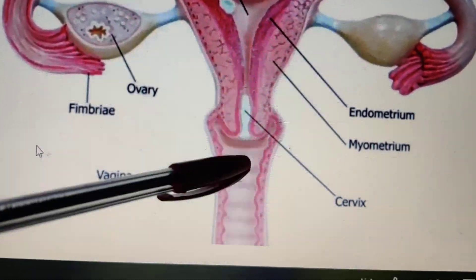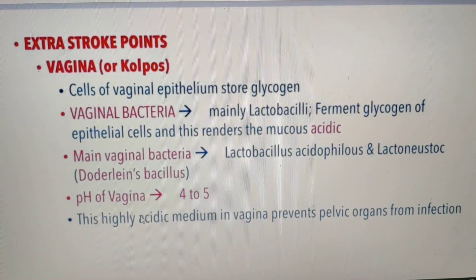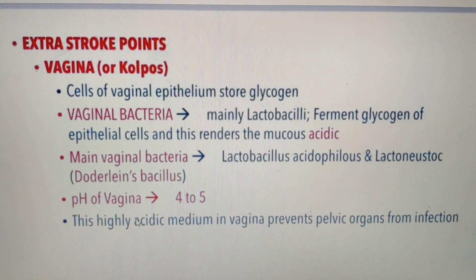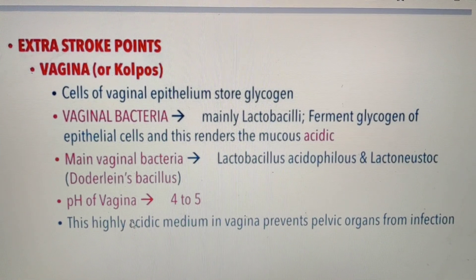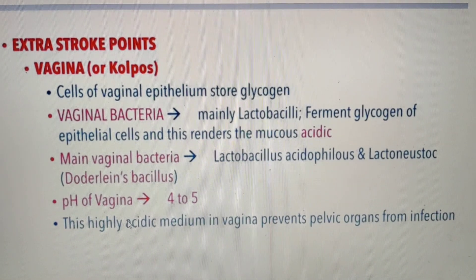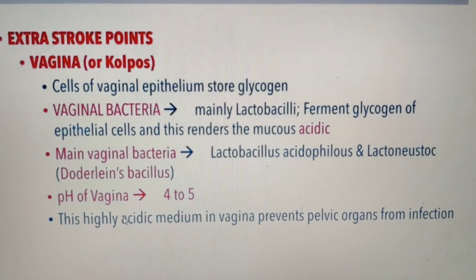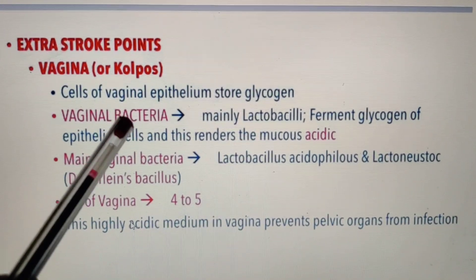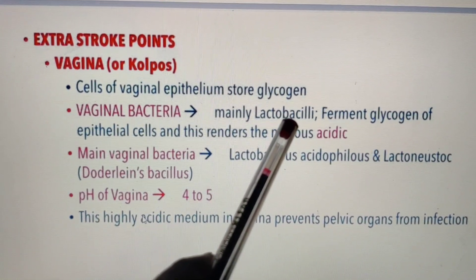The vagina opens outside through the vulva. The vagina is also called colpus. The walls are highly folded.